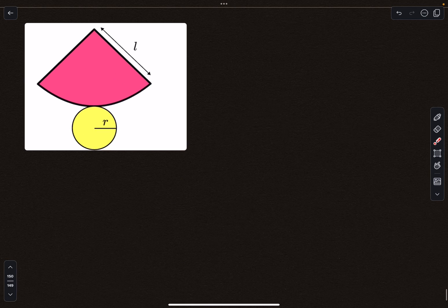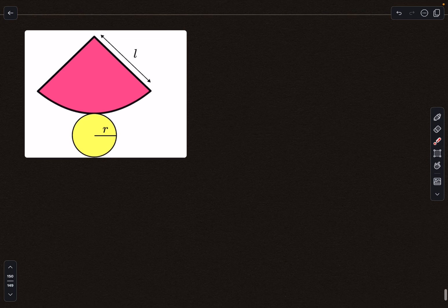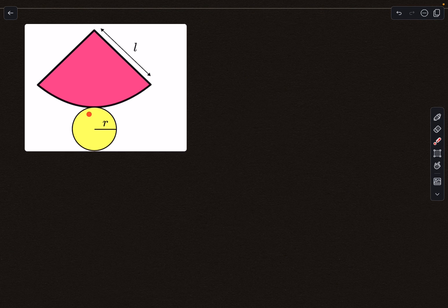So this is how we represent a cone in 2D. This is also called the projected lateral surface area of the cone, and this circle over here represents the base of the cone.